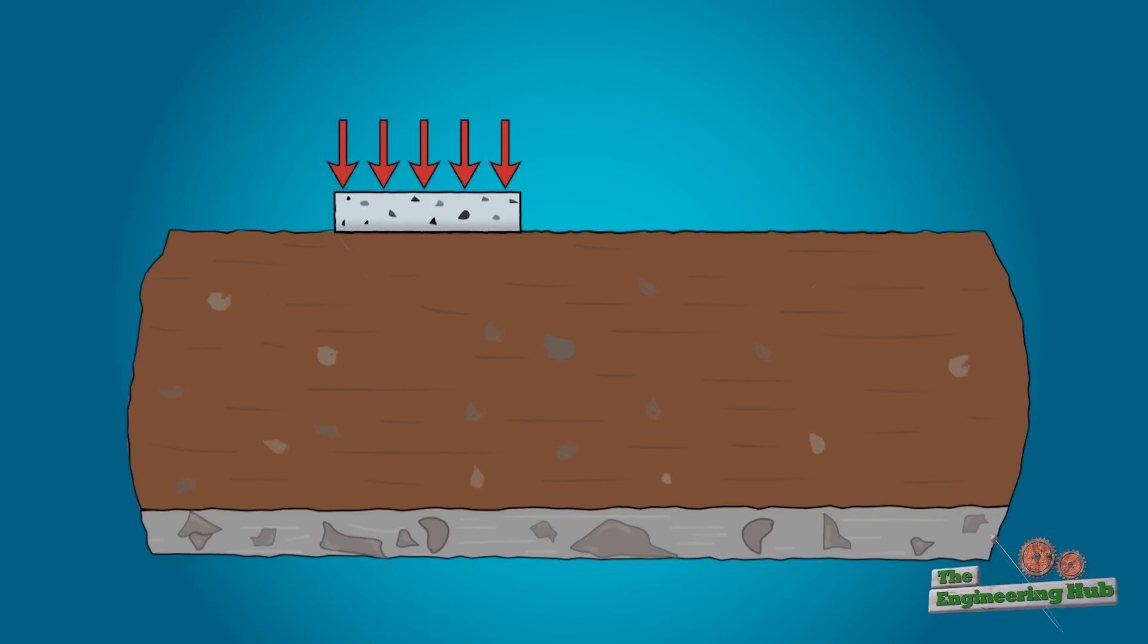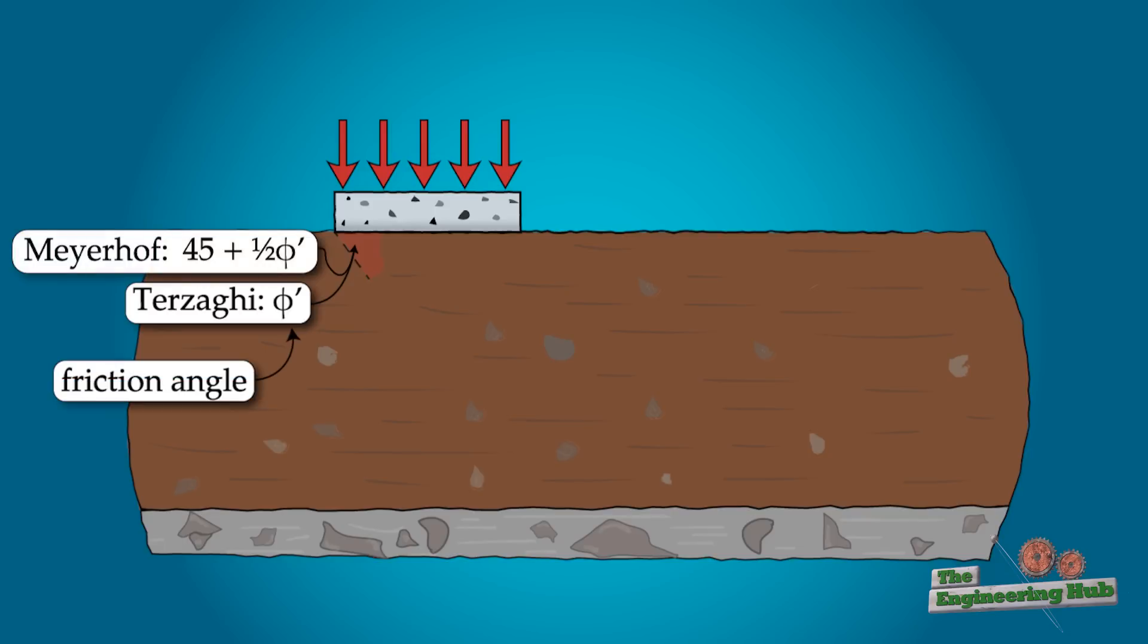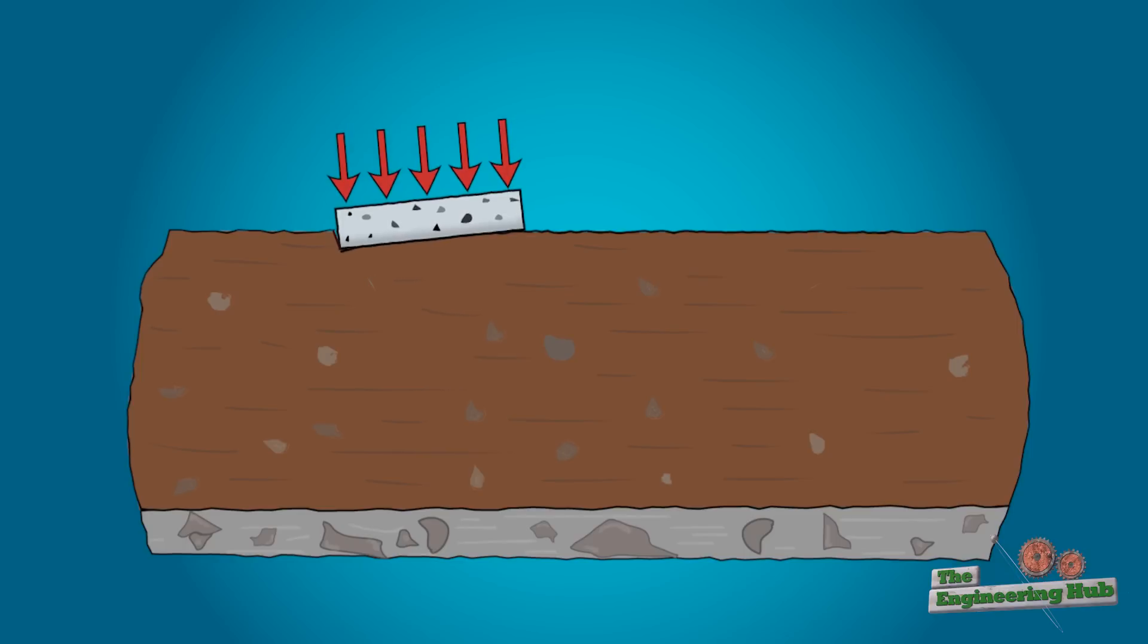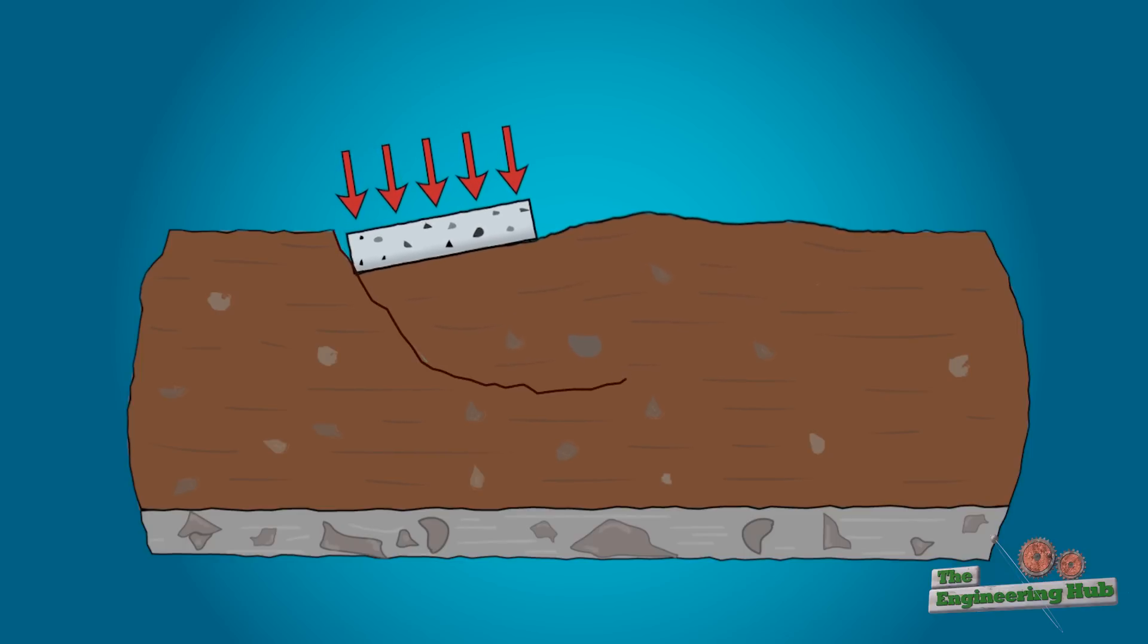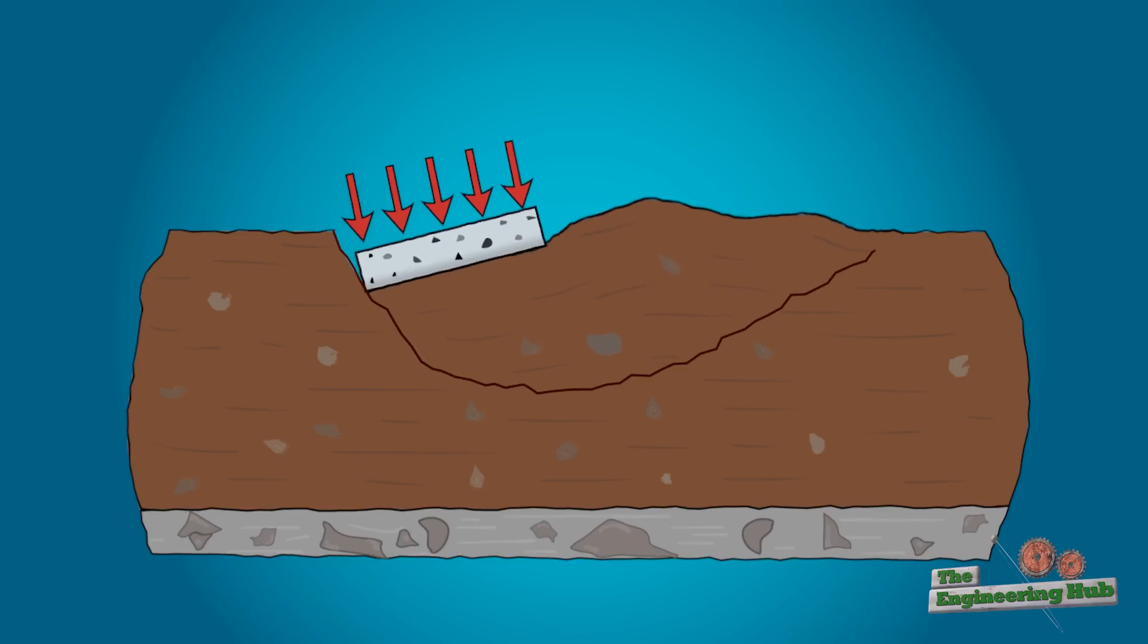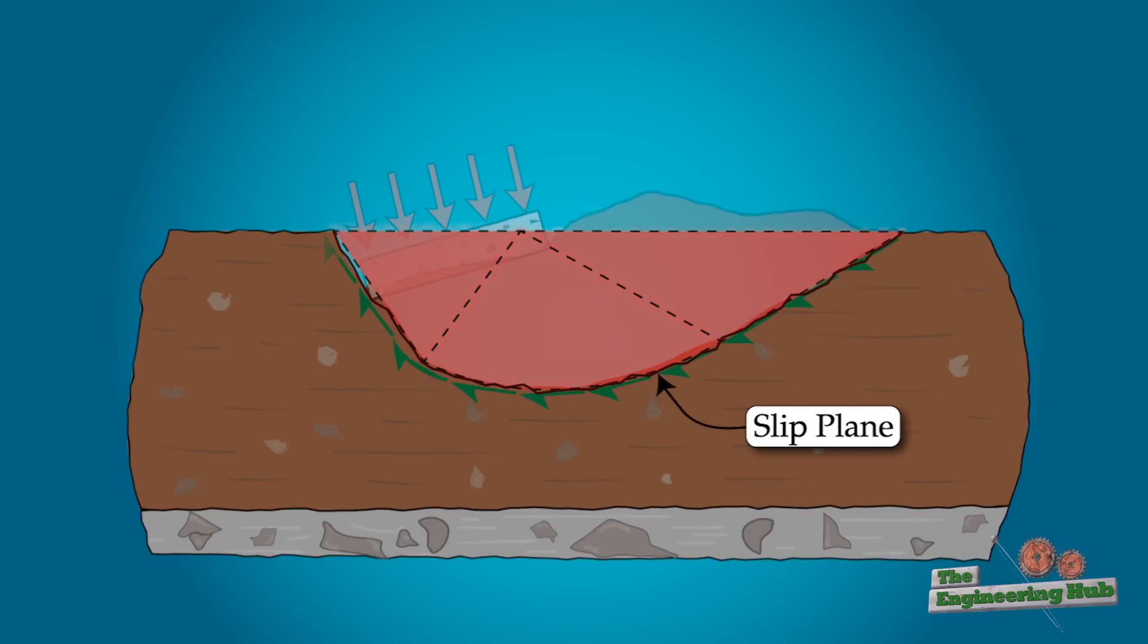Terzaghi realized that when the soil slips, it does so at an angle which depends on the friction angle of the soil. The soil near the corners of the foundation is subjected to the highest shearing stress and fails first. The displaced soil from under the foundation has to find itself an exit, causing a ground heave in the vicinity of the structure. The movement of the soil causes a slip plane to occur, whose geometry depends on the properties of the soil and the size of the foundation.